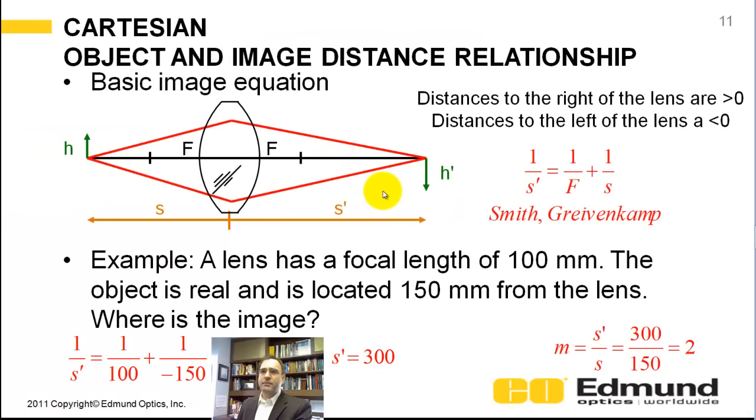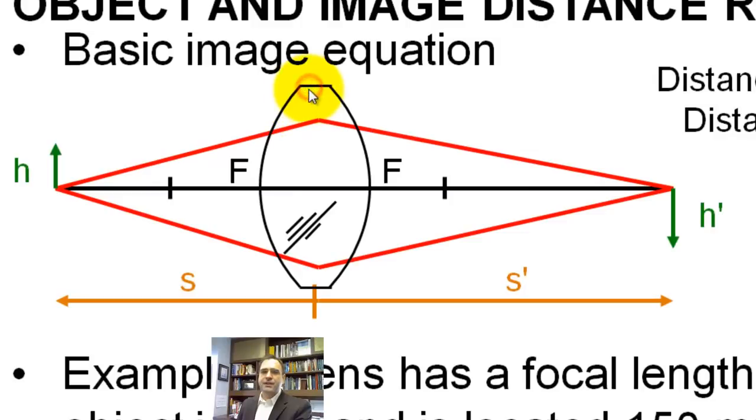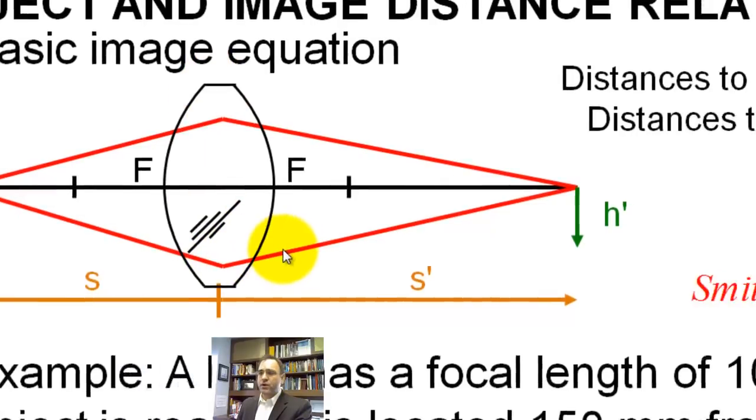Let's talk about imaging through a lens. Now, I've shown a thick lens here. This equation works for a thin lens, meaning infinitesimally small. It's a first order equation. This is using the Cartesian coordinate system.